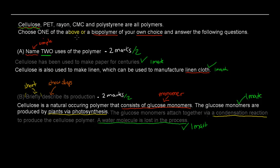It doesn't matter what polymer you have chosen, as long as the idea is the same. For Part A, you would have named two different uses — briefly, without much detail. For Part B, you briefly describe its production: what are the monomers, how do they attach together to make a polymer, and what kind of polymerization is it — condensation or addition? That's what you would give in the answer. I hope that was useful. Thank you very much.